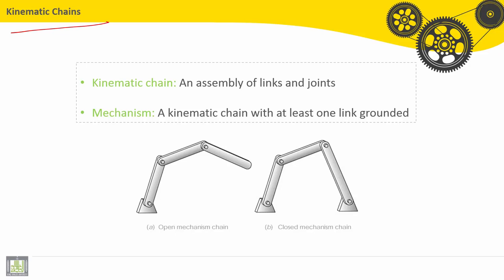A kinematic chain is an assembly of links and joints. A mechanism is a kinematic chain with at least one link grounded. Here we have two examples: an open mechanism chain where this link is grounded, and a closed mechanism chain where this link is grounded.